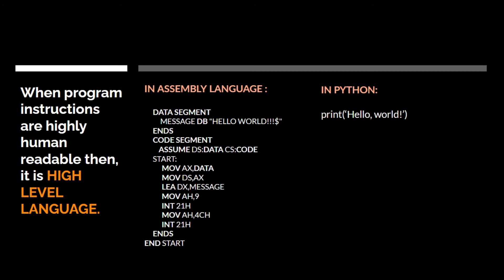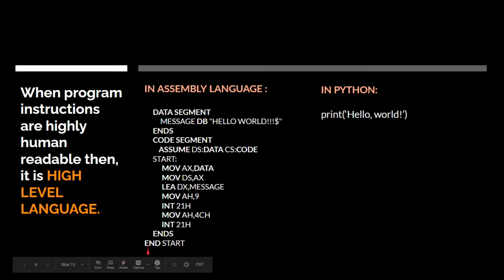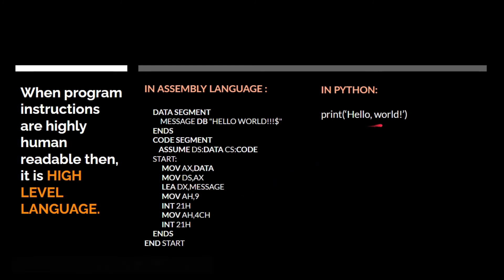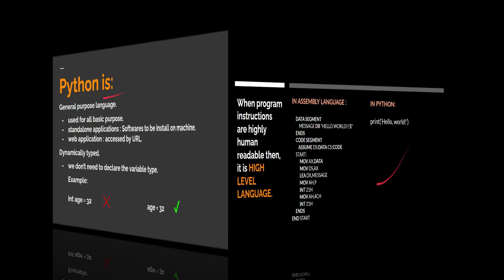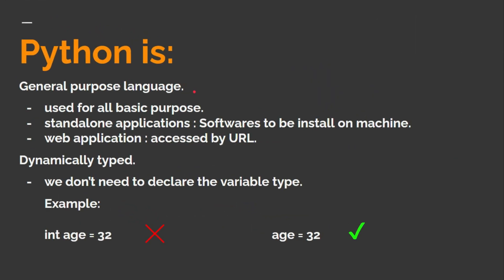For example, if we want to write a program to print Hello World, then in assembly language our code will look complex, whereas in Python it is a simple single line statement. This is because assembly language is a low-level language and Python is a high-level language.